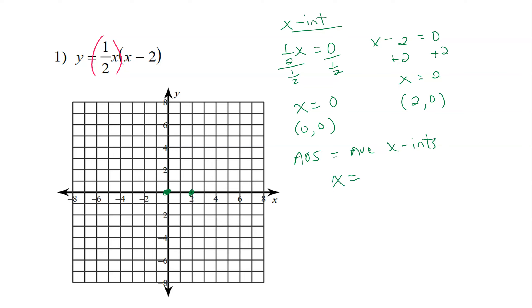So to find our axis of symmetry, we're going to do x equals 0 plus 2 divided by 2, which gives us 2 divided by 2, which is 1. So x equals 1 is our axis of symmetry.